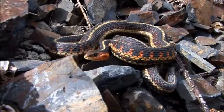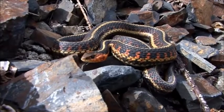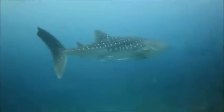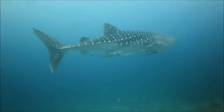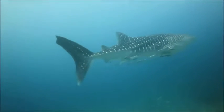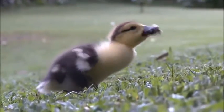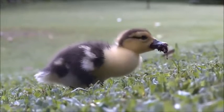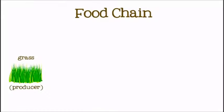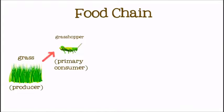In the presence of sunlight, plants prepare food for the whole animal kingdom. Herbivores eat these plants directly. Carnivores eat herbivores. After that, carnivores become part of the soil, which is reabsorbed by plants. Hence, this makes a chain called the food chain.